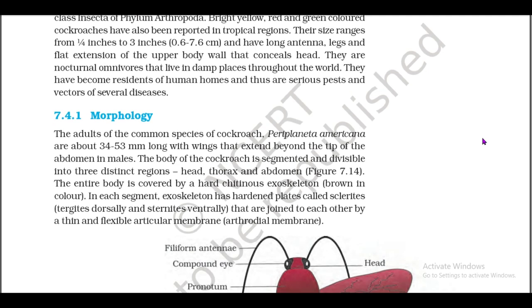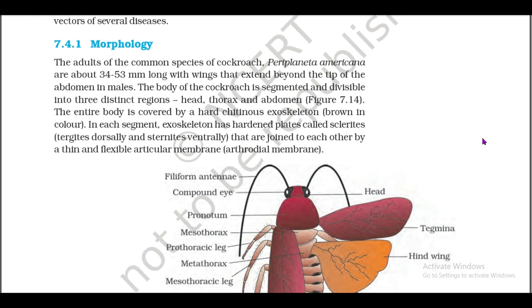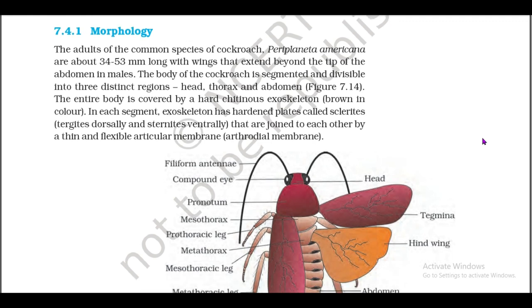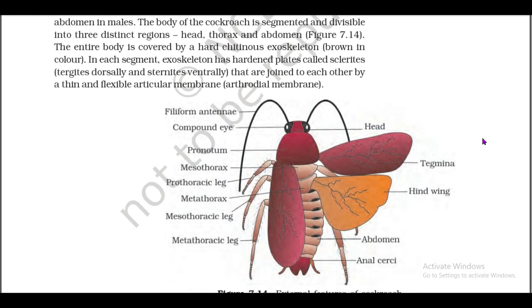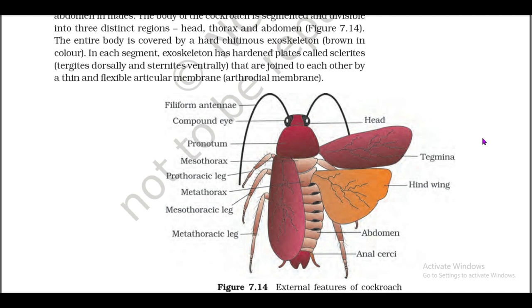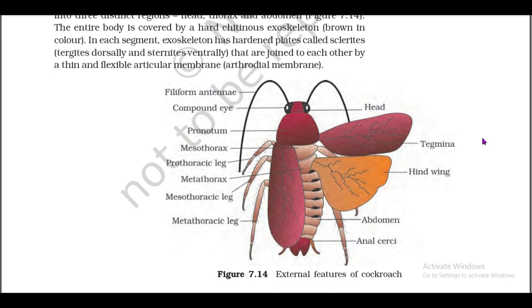7.4.1: Morphology. The common species of cockroach, Periplaneta americana, is about 34 to 53 mm long with wings that extend beyond the tip of the abdomen in males. The body of the cockroach is segmented and divisible into three distinct regions: head, thorax, and abdomen (figure 7.14). The entire body is covered by a hard exoskeleton, brown in color. In each segment, the exoskeleton has hardened plates called sclerites — tergites (dorsal) and sternites (ventral) — that are joined to each other by a thin flexible articular membrane.